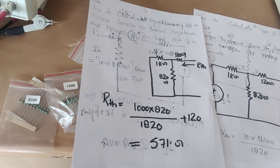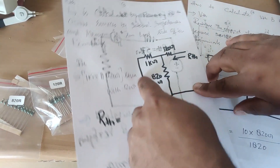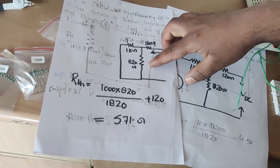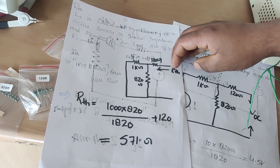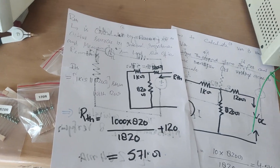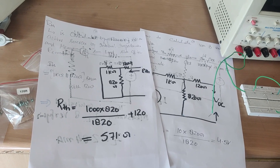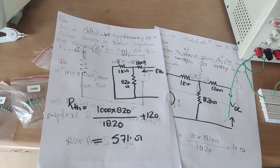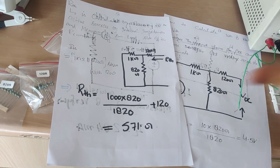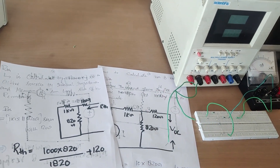When the voltage source is shorted, the 1 kilo ohm and 820 ohms are in parallel, and their combination is in series with the 120 ohm resistor — that gives RTH. Theoretically this comes out to be 571 ohms, and using the multimeter it comes out to be 562 ohms. The difference is due to component tolerance, which may vary by plus or minus 5 percent.